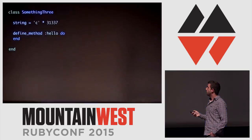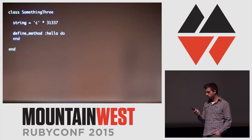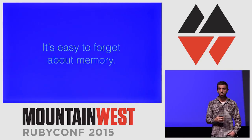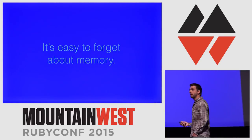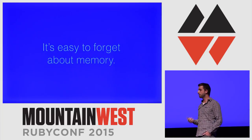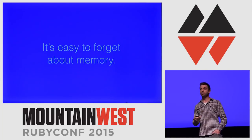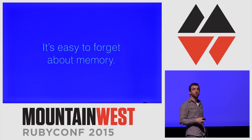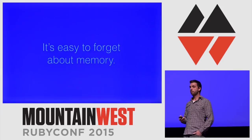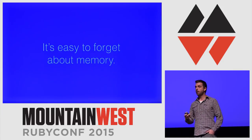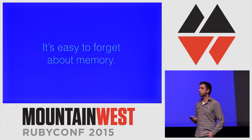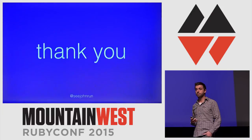The same is true for attr_accessor — it will take closure scope. It's easy to forget about memory, easy to forget about how many objects you create, how much space they take up, or whether you're letting them be freed by the garbage collector, because the garbage collector does so much work for you. I hope this talk reminded people of how to be more logical and thoughtful about the objects they create and how they're released. Thank you.